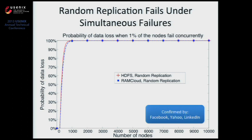This graph shows the probability of losing all copies of at least one data chunk in the entire cluster on the y-axis, and the number of nodes in your cluster on the x-axis. We computed these probabilities for two systems — Hadoop File System and RAM Cloud — both using random replication. As you can see, once your cluster scales beyond a couple hundred nodes, you're basically guaranteed to lose data. This has been confirmed by Facebook, Yahoo, LinkedIn, and others who note that every time they have a power outage they lose access to data.